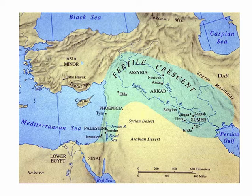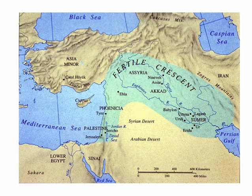This Fertile Crescent, as it was called, became one of the birthplaces of civilization because agriculture took root in this region around the Tigris and Euphrates River — hence the name Fertile Crescent. A lot of crops were grown here, but this was not an easy process, and it was precisely the difficulty of agriculture in this region that gave rise to civilization there.